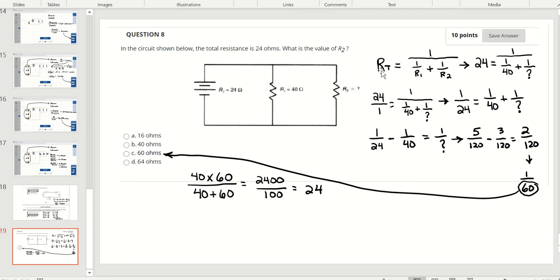The formula we're going to use is resistance total equals 1 over the fraction 1 over resistance 1 plus 1 over resistor 2. We fill in the numbers we know: 24 is the total resistance, the first resistor is 40 ohms, the second resistor is the unknown.